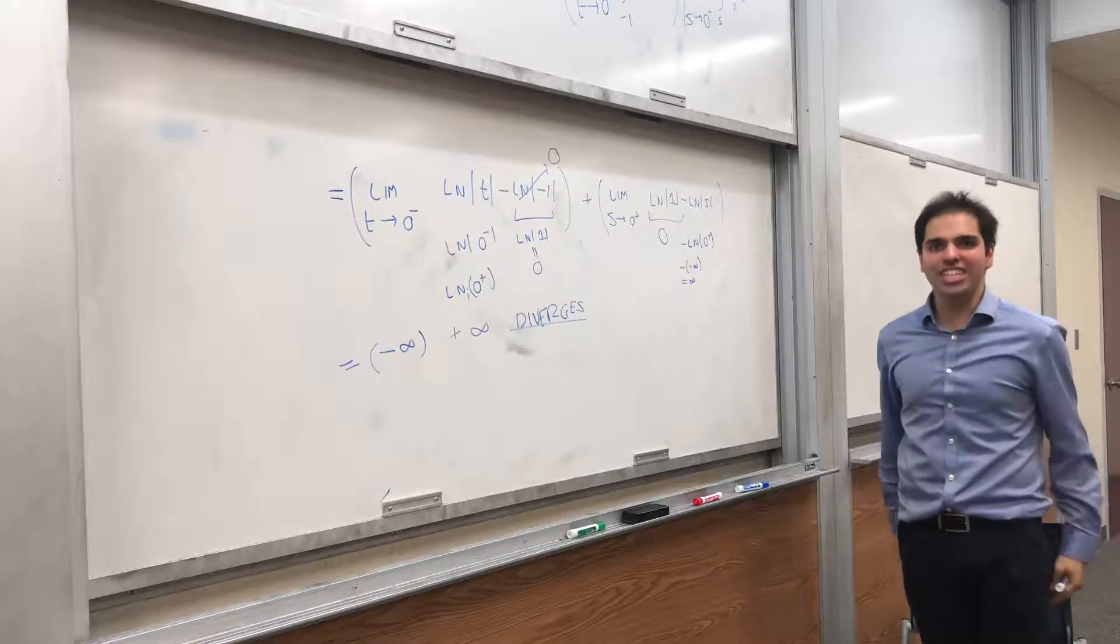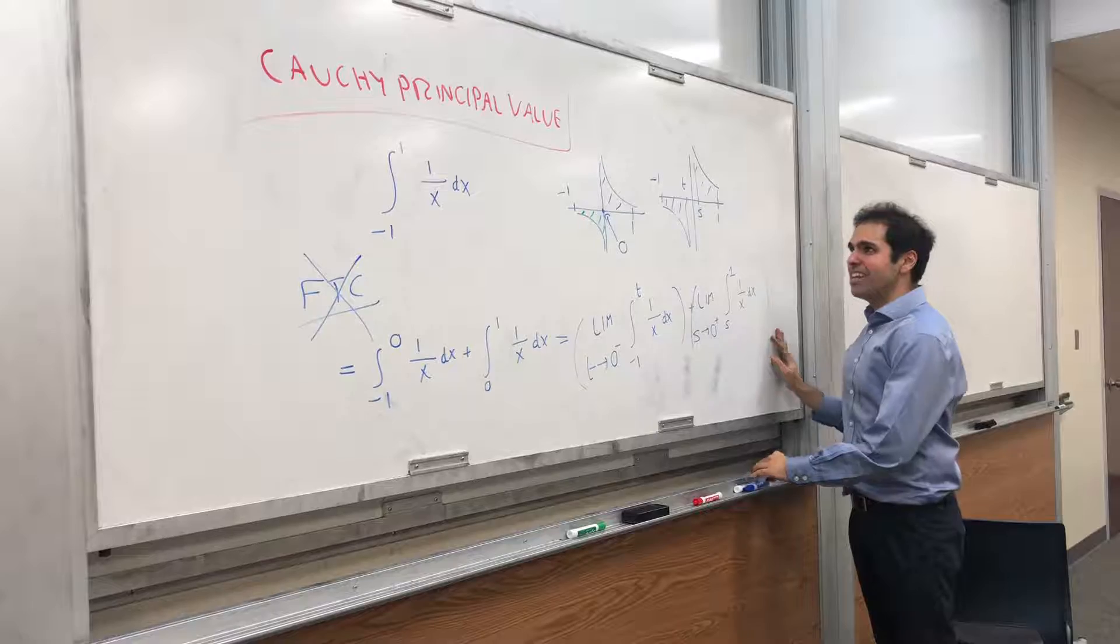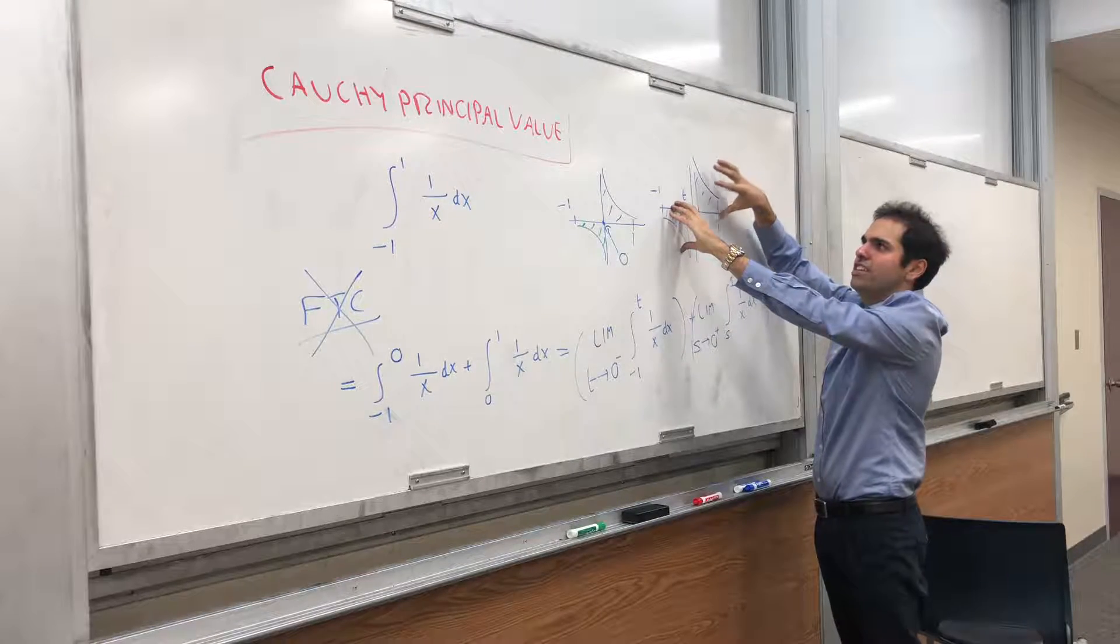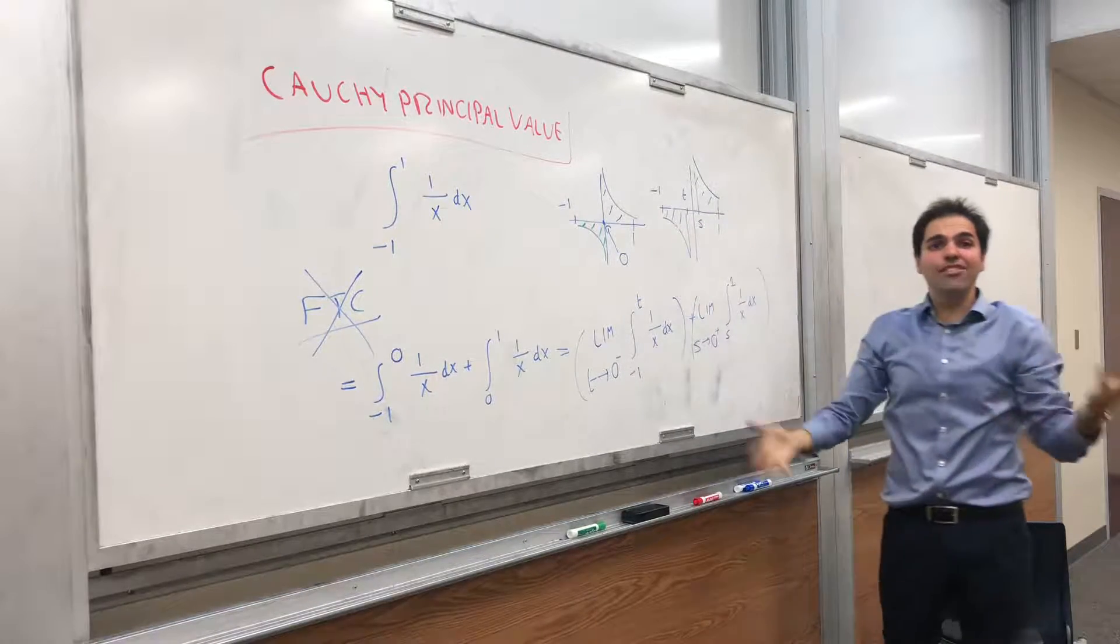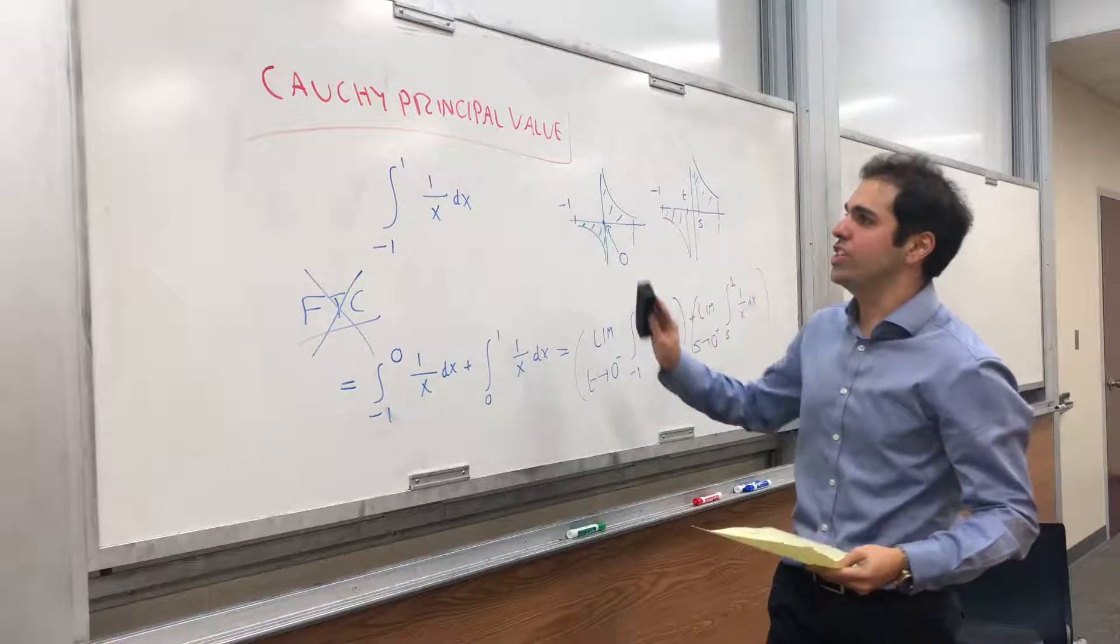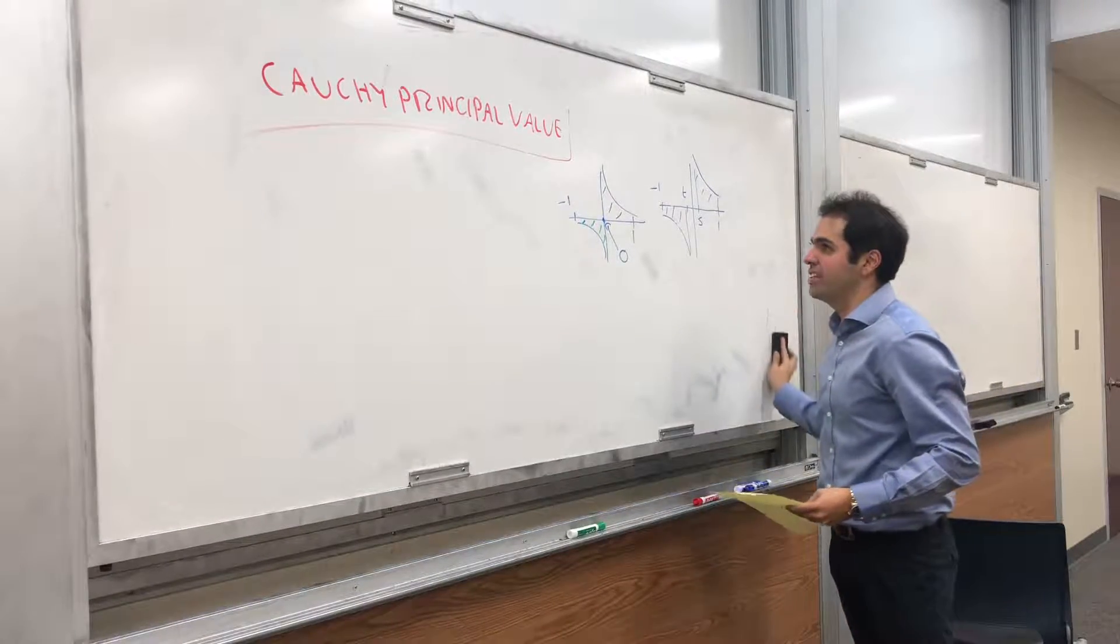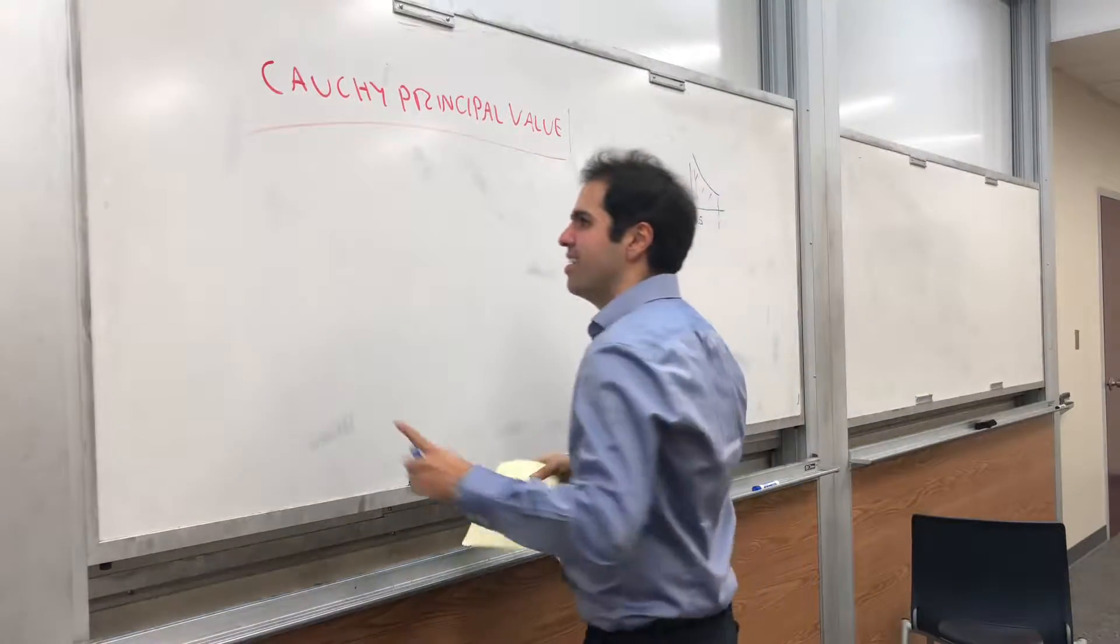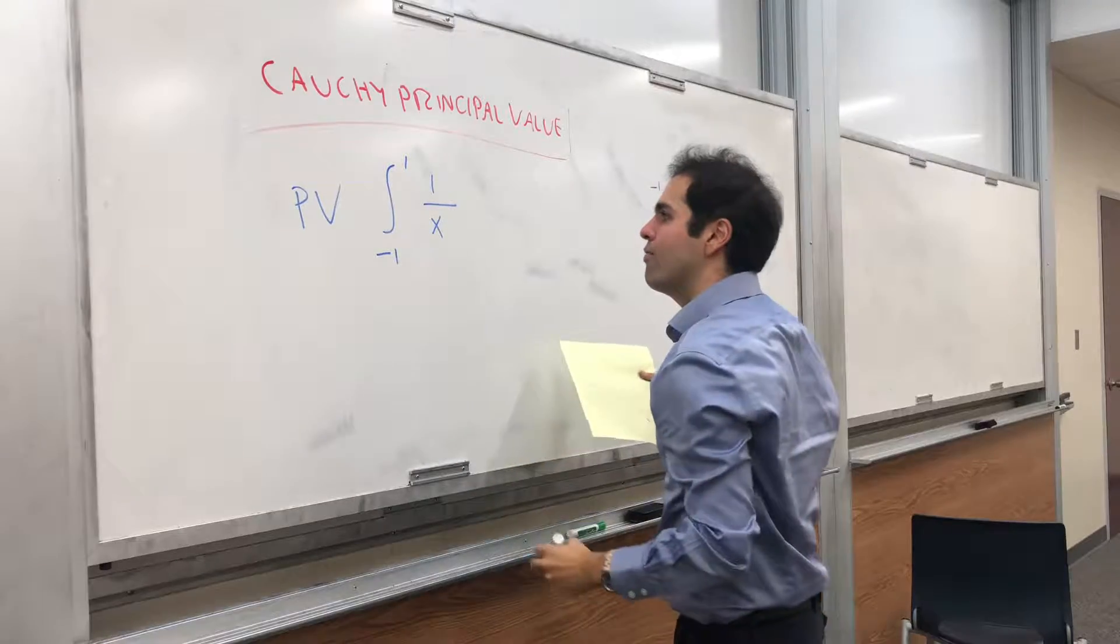Okay. But what if you're like Cauchy and you're like, man, I really want this to converge. In particular, notice there is a symmetry involved here, right? Even though this area is minus infinity and this area is infinity, they should cancel out. And the question is, how can you define the improper integral so that it actually cancels out? And this is what's called the Cauchy principal value. It's a way of defining values of improper integrals if they diverge. And this is called PV, principal value integral of 1 over x dx.